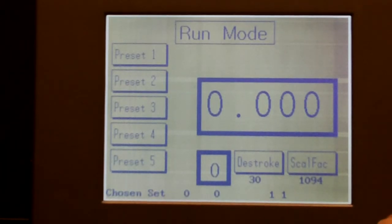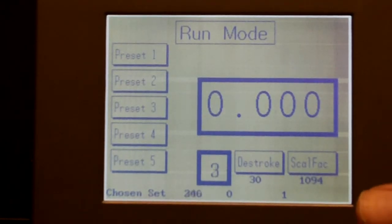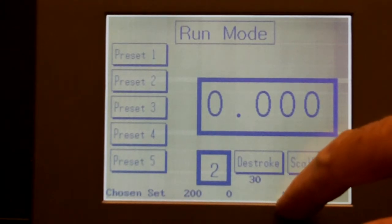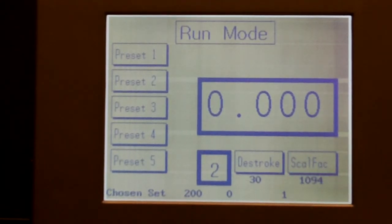As the operator selects the sets, the set indicator advances, tells them which set he's on, and the indicator also shows the status of the communication link between the cab and the head.